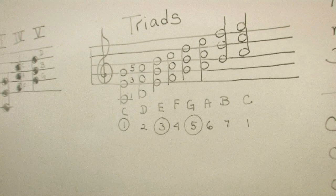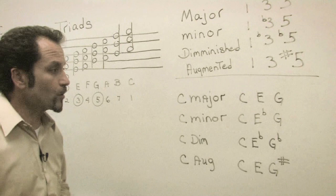Now getting back to the four different types of triads, as I said before, we have major, minor, diminished, and augmented.